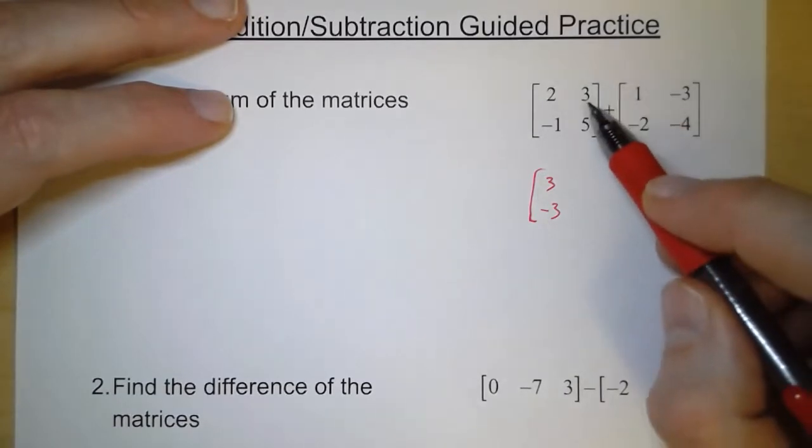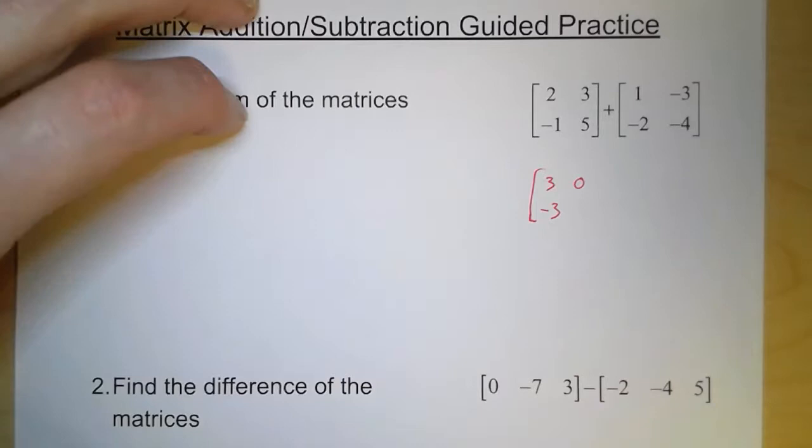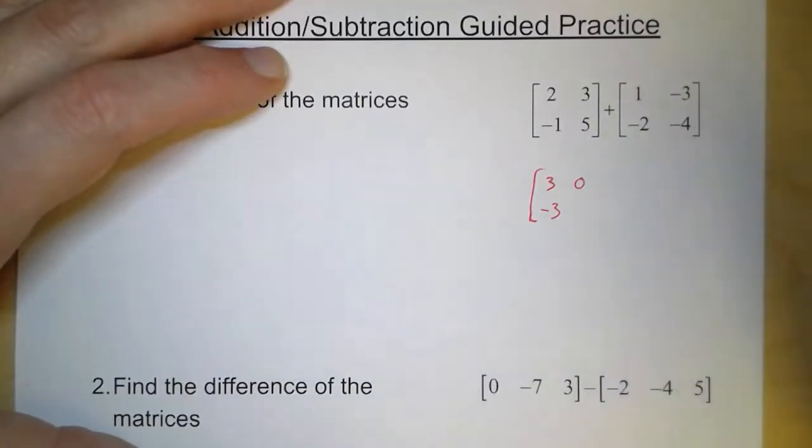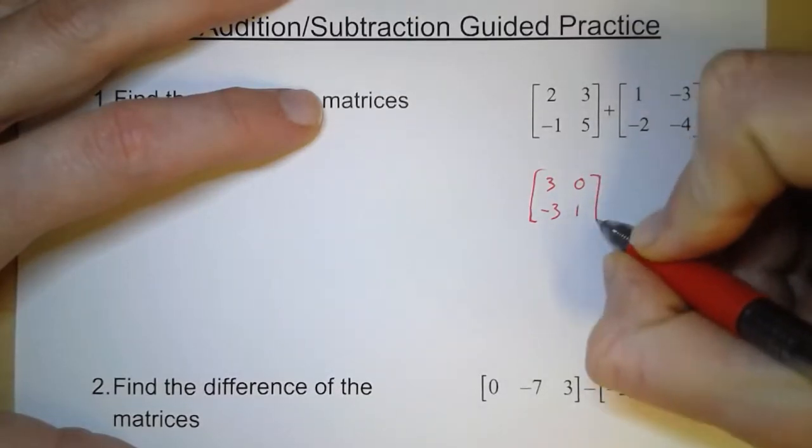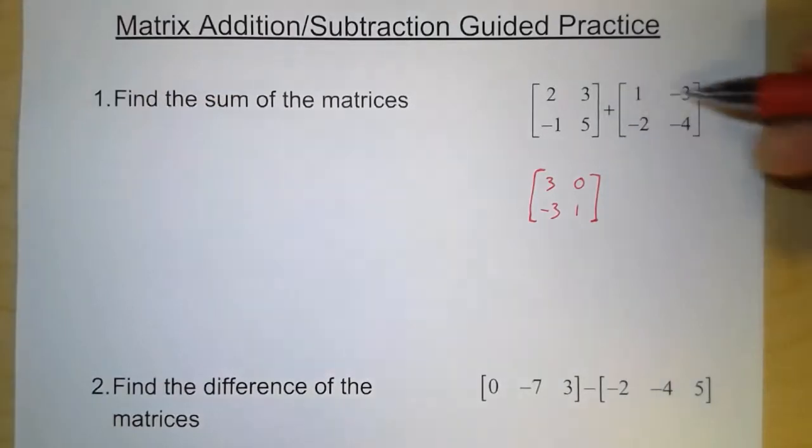In the upper right hand corner, we have 3 and negative 3, which gives us 0. And then in the lower right hand corner, we have 5 and negative 4, which we add together, and that gives us positive 1. And so this is the sum of these two matrices. Like the others, it is a 2 by 2 matrix.